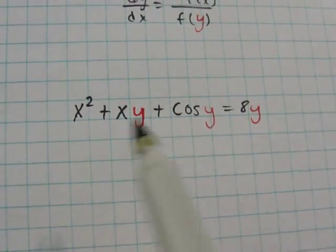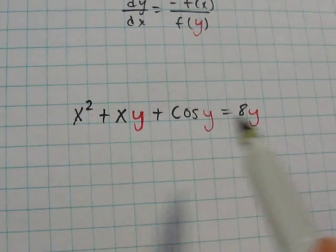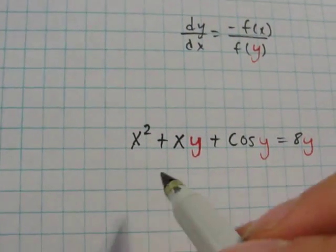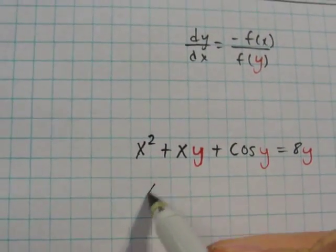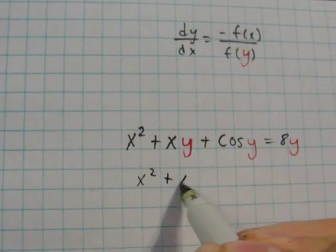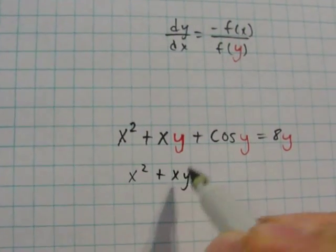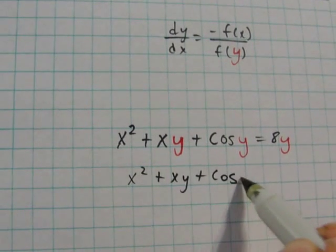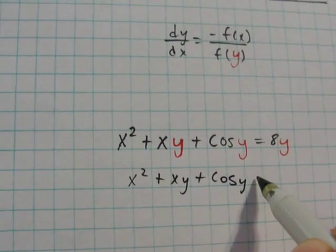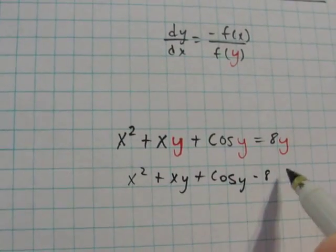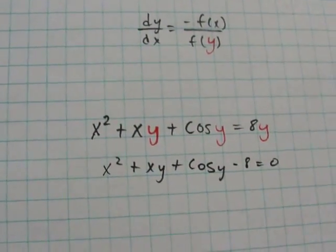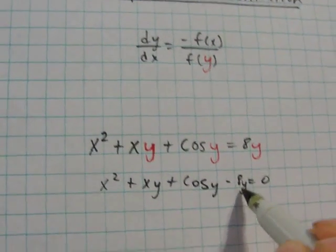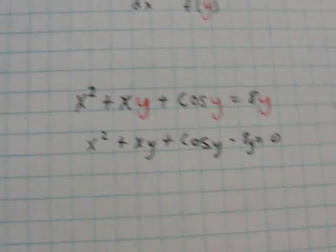So what you want to do first is you want to set your equation equal to zero. So you're going to have x squared plus xy plus cosine y minus 8y equals zero.